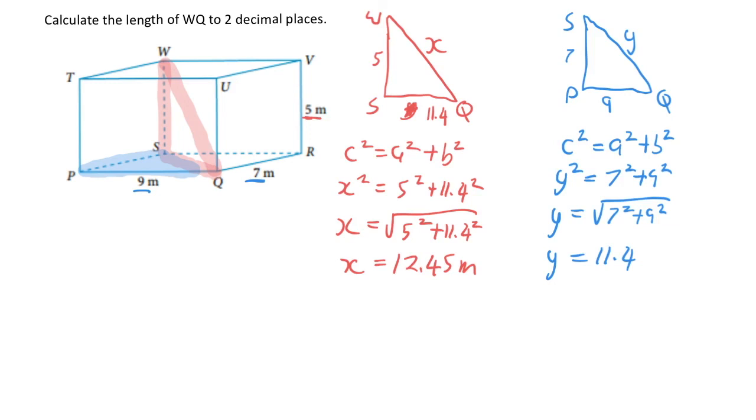So now that I've found my original unknown value, I know that the side WQ is going to equal 12.45 metres. That's an example of how we can use Pythagoras within a 3D shape to find an unknown length.